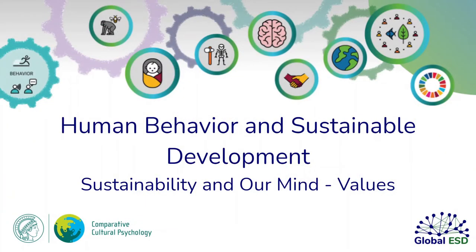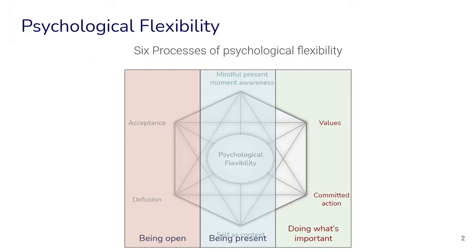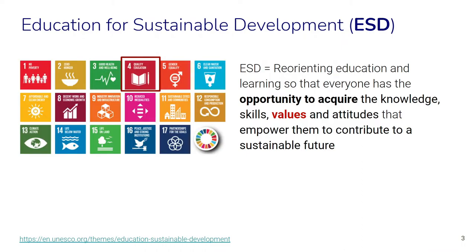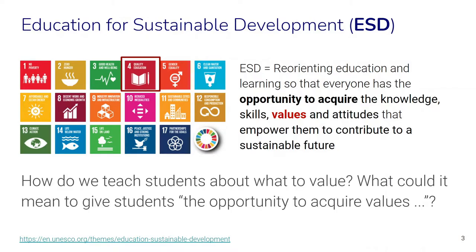In this part we want to explore the concept of values. Values are part of the processes of psychological flexibility, meaning being aware and identifying our values and aligning our behaviors in line with those values. In education for sustainable development, values also play an important role. Education for sustainable development is often described as reorienting education and learning so that everyone has the opportunity to acquire the knowledge, skills, values, and attitudes that empower them to contribute to a sustainable future.